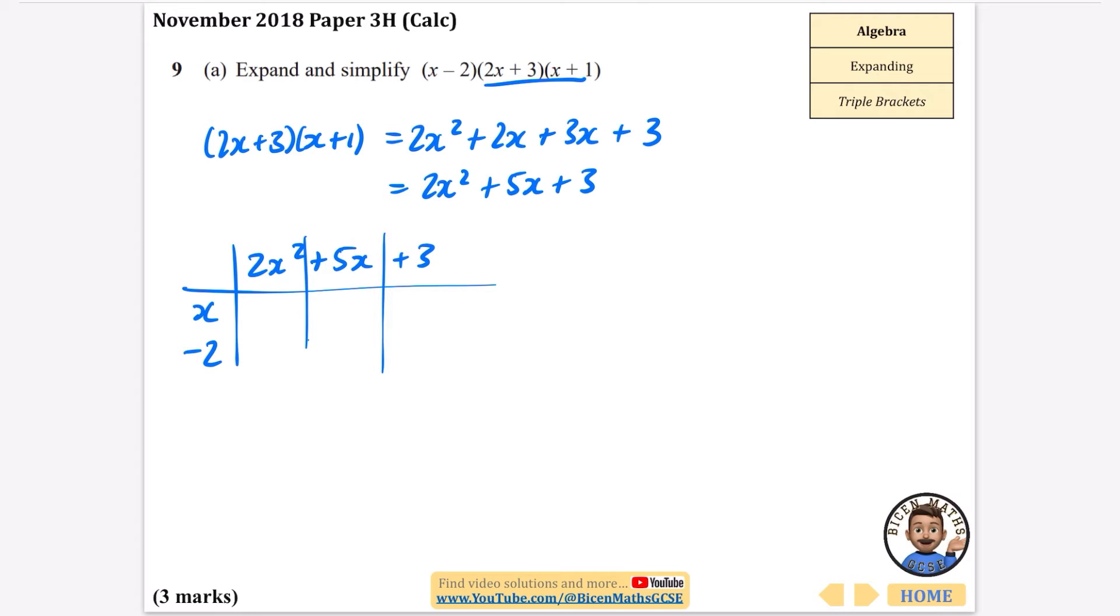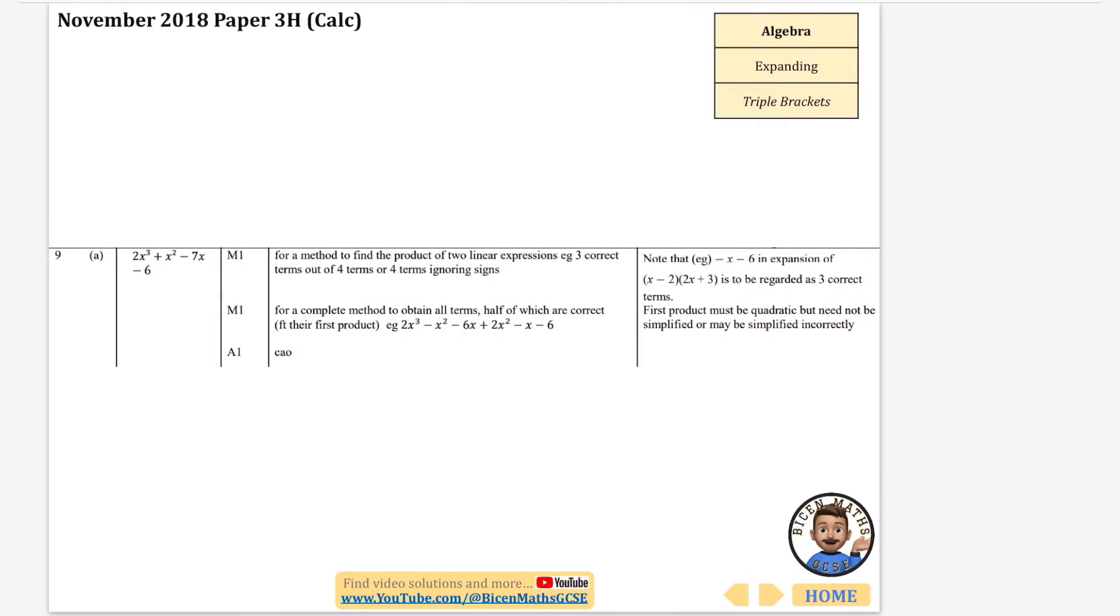So I'm going to times them all by x. So I get 2x cubed, I get 5x squared and I get 3x and now I'm going to times them all by minus 2. So that's minus 4x squared minus 10x and minus 6. So when I do the double brackets, x minus 2 multiplied by 2x squared plus 5x plus 3, that is going to give me the 2x cubed to begin with. Now I'm going to simplify these two. So 5x squared minus 4x squared is just x squared and then the next pair that I've got, that's 3x minus 10x that is minus 7x and then at the end I have minus 6. So that's 2x cubed plus x squared minus 7x minus 6.